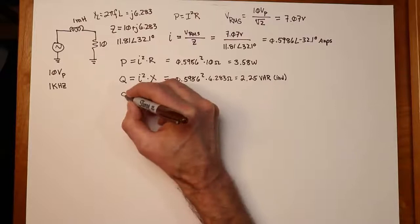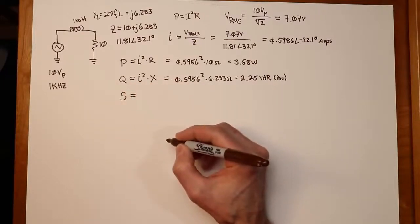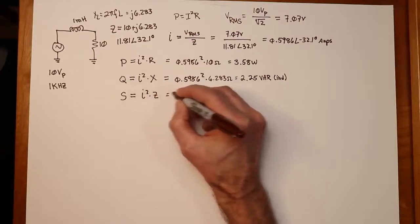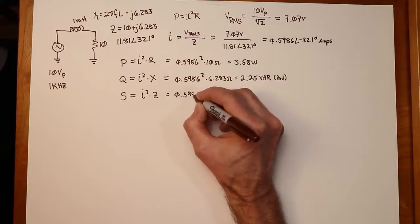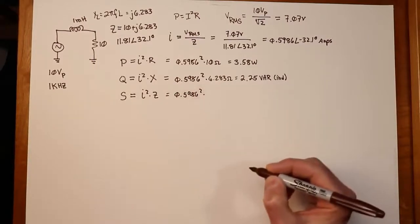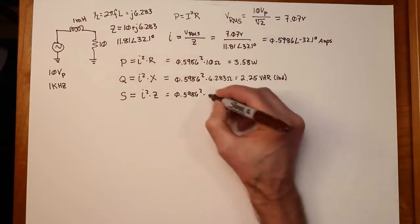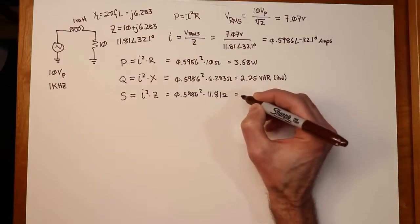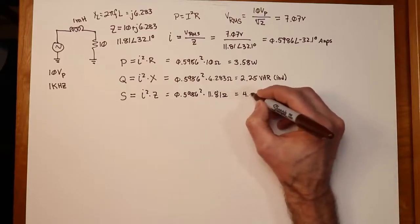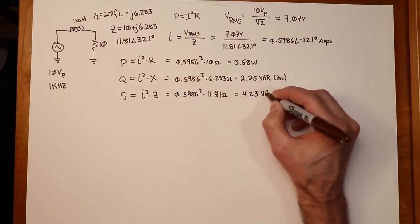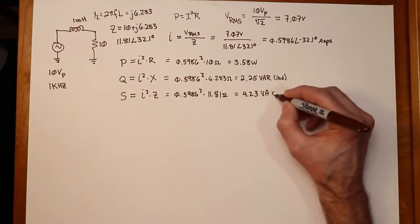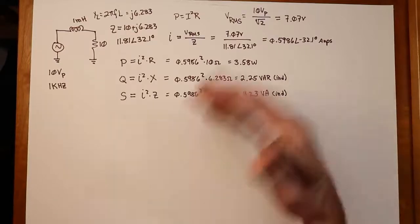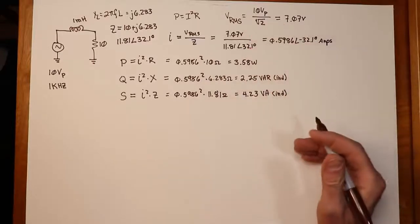And finally, we can figure out the apparent power, S. In this case, we do an I squared times Z. So again, same current. What is the Z value? 11.81. And that's going to get us a value of 4.23 volt amps. Also inductive since we only have the two components in there. So this is what we wind up with for our three results.